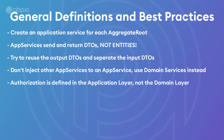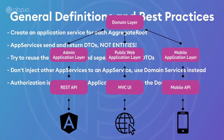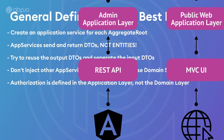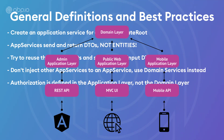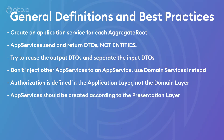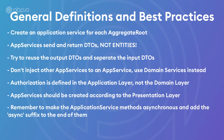Authorization is also handled in the application services, not in the domain layer. If we think about it, with three different applications like the administration app, authorization is implemented differently for each application rather than consistently in the domain layer. Application services should also be created according to the presentation layer — if the presentation layer has three buttons, we'll probably have three application service methods. Remember to make application service methods asynchronous and add the async suffix to them.